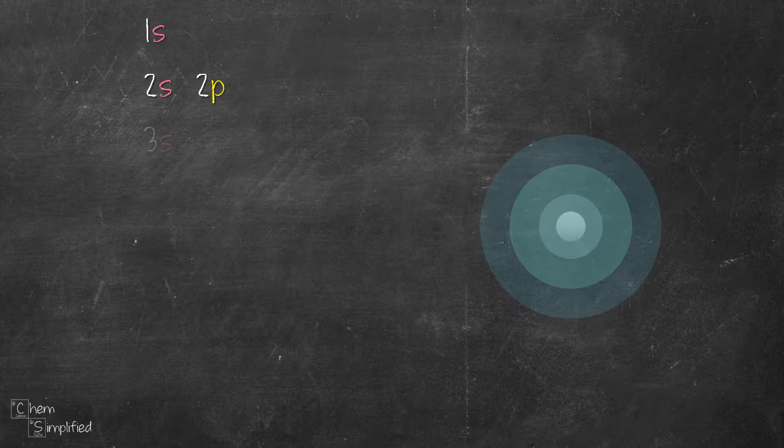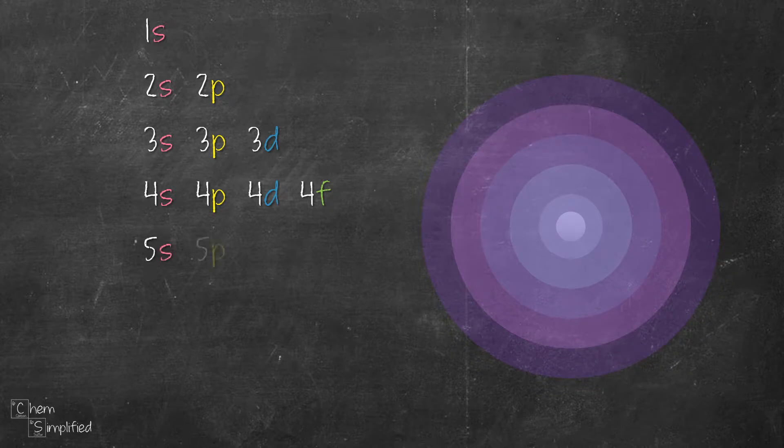In shell one, there is an S orbital and we're going to call it 1S since it's located inside shell number one. And in shell two, we have two S and two P orbitals. And the same thing goes on and on for shell number three, four, five, six and seven.